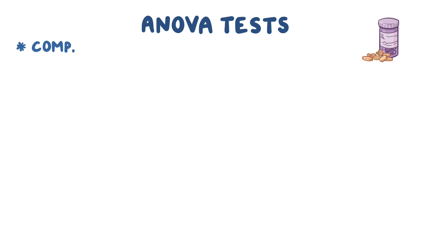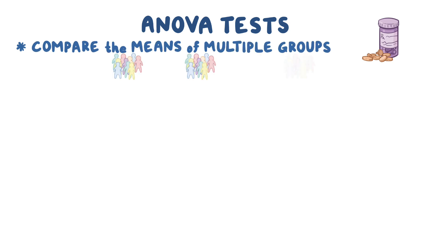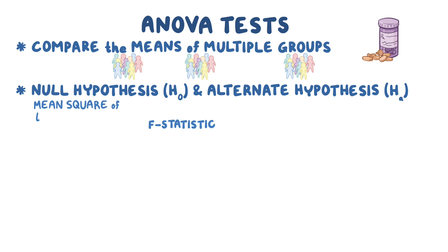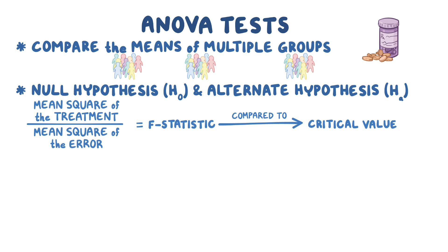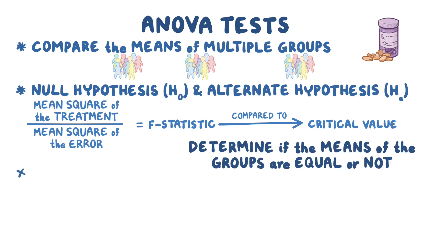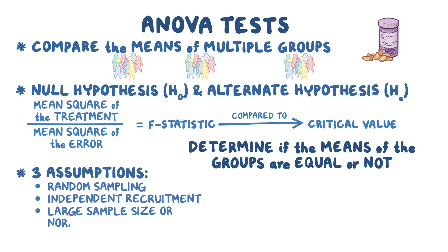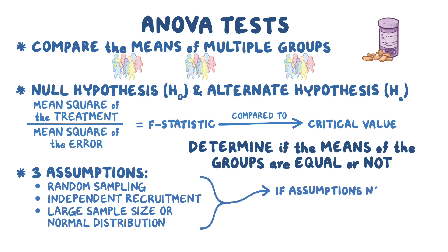As a quick recap: ANOVA tests are a type of parametric test used to compare the means of multiple groups. Each ANOVA test has a null hypothesis and an alternate hypothesis, and to test these hypotheses, we calculate an F-statistic by dividing the mean square of the treatment by the mean square of the error. This F-statistic is compared to a critical value to determine if the means of the groups are equal or not. There are three assumptions — random sampling, independent recruitment, and large sample size or normal distribution — that must be met. If they are not met, the Friedman test can be used to compare group medians instead.